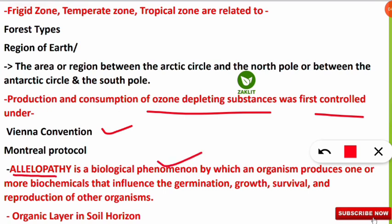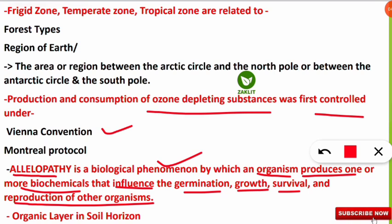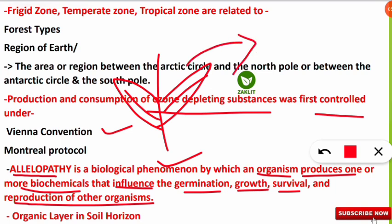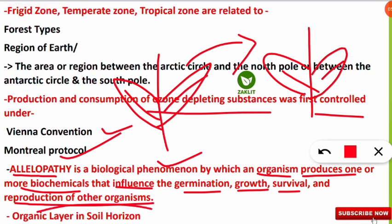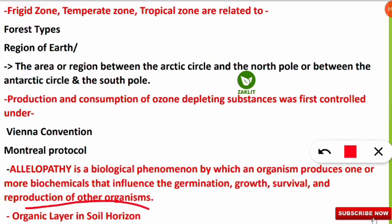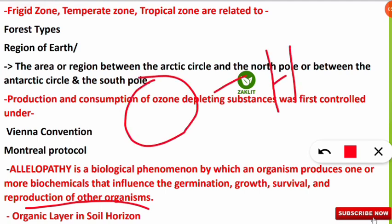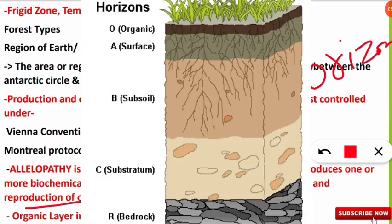The next question was related to allelopathy. Allelopathy is a biological phenomenon by which an organism produces one or more biochemicals that influence the germination, growth, survival, and reproduction of other organisms. This is mostly seen in plants — they produce toxins or biochemicals that restrict other plants from growing in their region. The next question asked about the organic layer in the soil horizon. The correct answer is the O horizon, not the A horizon. The O horizon is the organic horizon; the A horizon is the surface horizon; B horizon is the subsoil; C horizon is the substratum; and R is the bedrock.